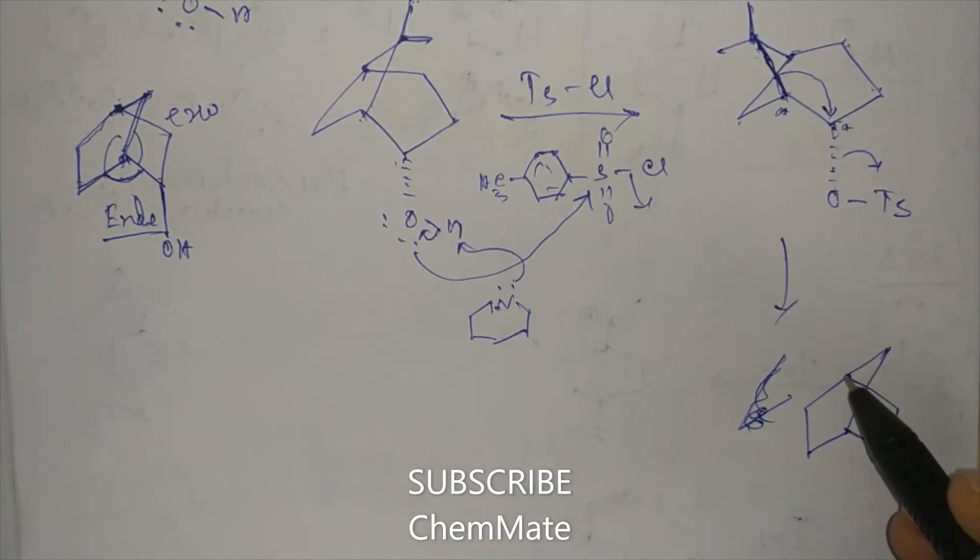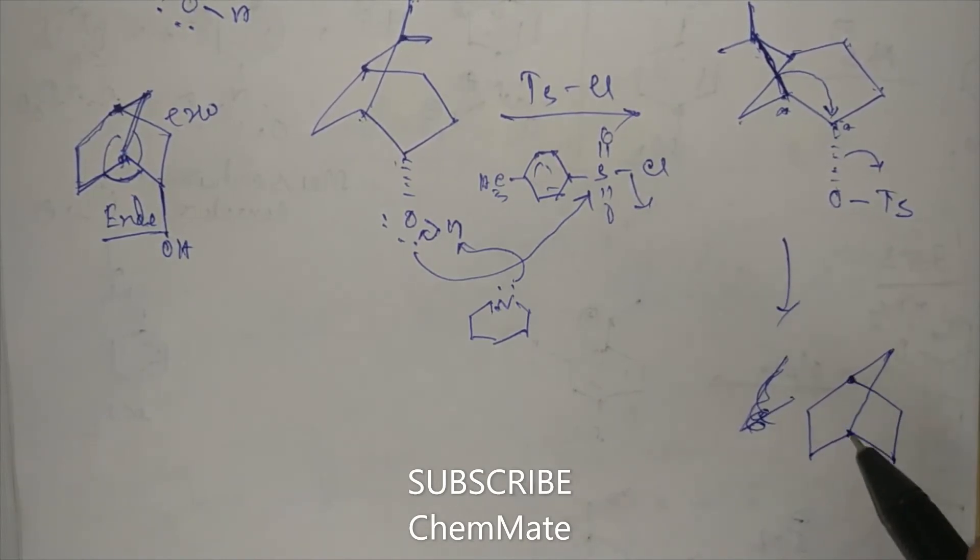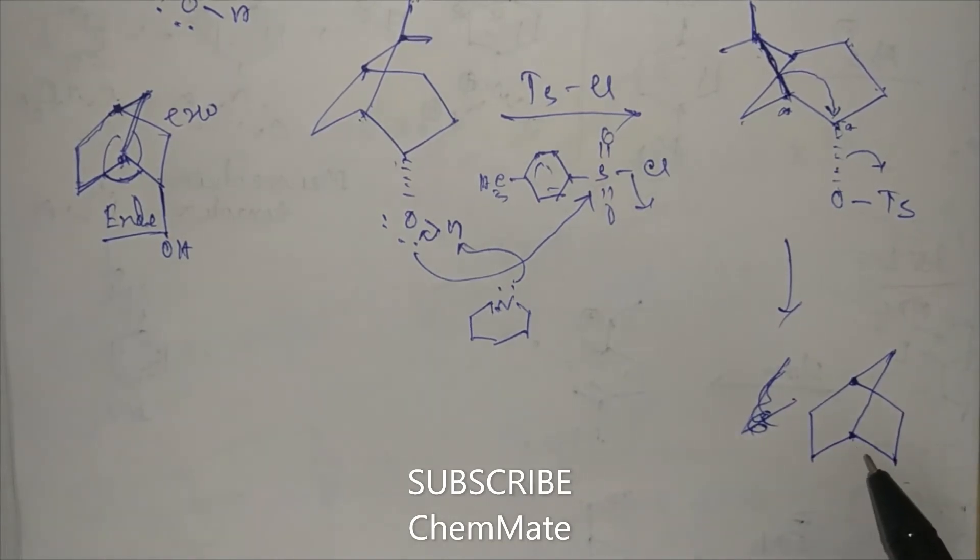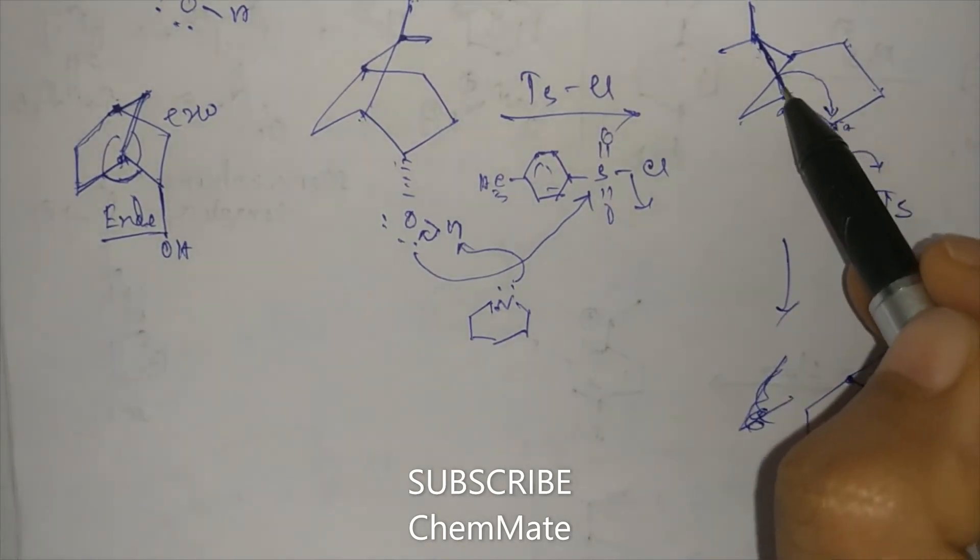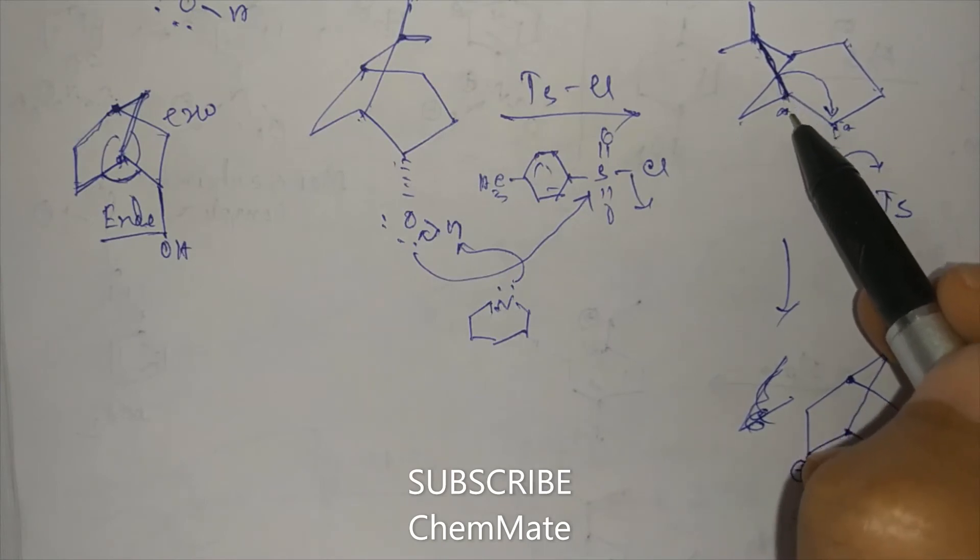Two five-member rings are connected, and here now the positive charge will be here because as this bond migrates here, there will be a positive charge generated here.